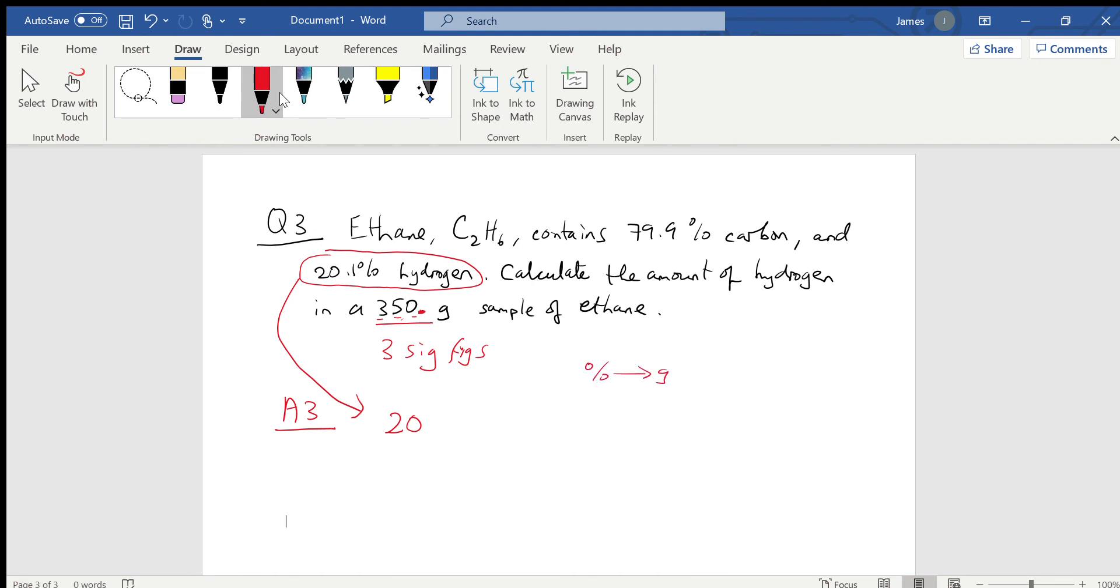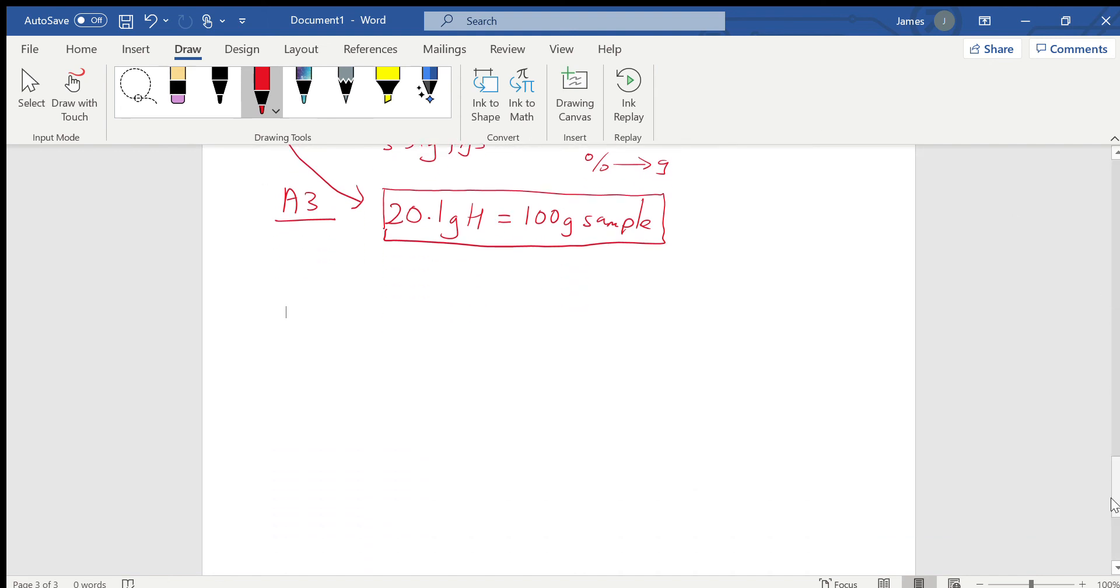20.1 percent if we convert that to gram, we get an equality: 20.1 grams of hydrogen is equal to 100 gram sample. In this case the sample is ethane, but that's effectively what we know from converting percentage to gram. That kind of leads us in the correct direction.